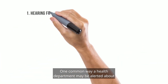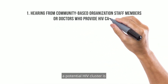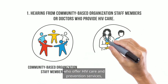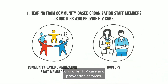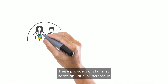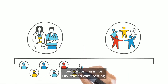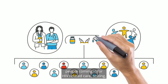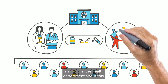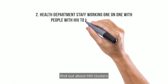One common way a health department may be alerted about a potential HIV cluster is by hearing from community-based organization staff members who offer HIV care and prevention services, or doctors who provide HIV care. These providers or staff may notice an unusual increase in people coming in for HIV-related care, testing, or prevention services and inform the health department about this.